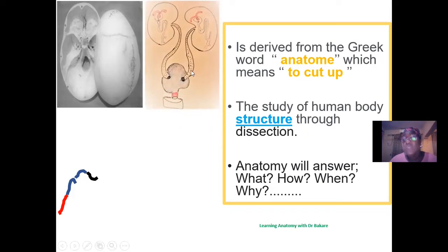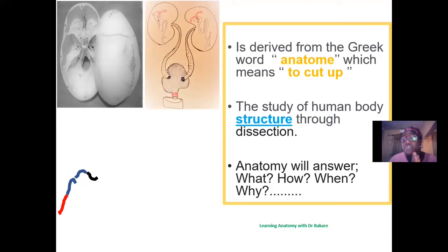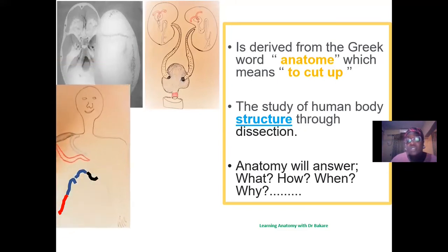Anatomy will also help us answer the question of how. For example, how is urine produced by the kidney? Urine is produced by the kidney because of the microscopic components of the kidney, which are basically the nephrons. The nephrons are the microscopic units responsible for the production of urine.